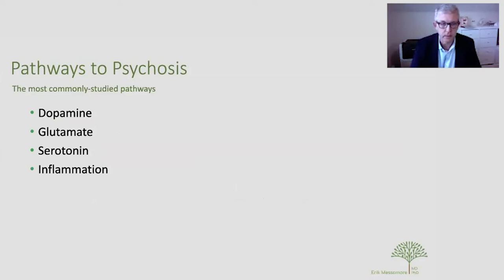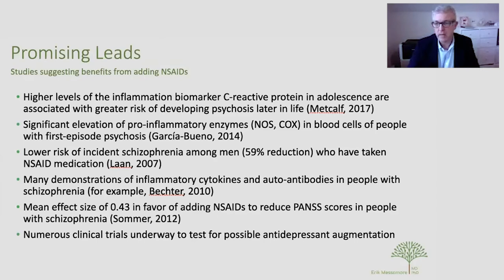Let's focus today on psychosis. As a review, what we call psychosis has a lot of different pathways to it. The most commonly studied and probably numerically most common chemical involved in psychosis is dopamine. But you can get psychosis by interfering with glutamate signaling, by augmenting certain serotonin receptors, and absolutely from the consequences of inflammatory processes.